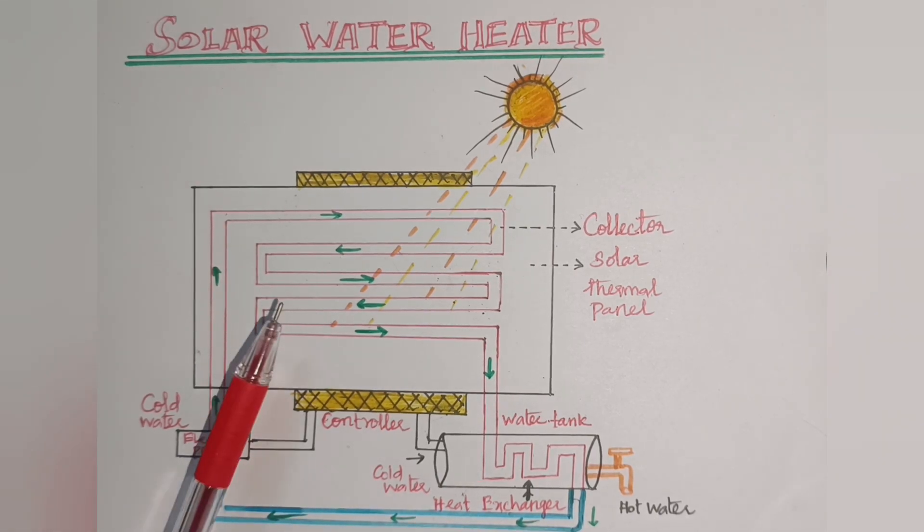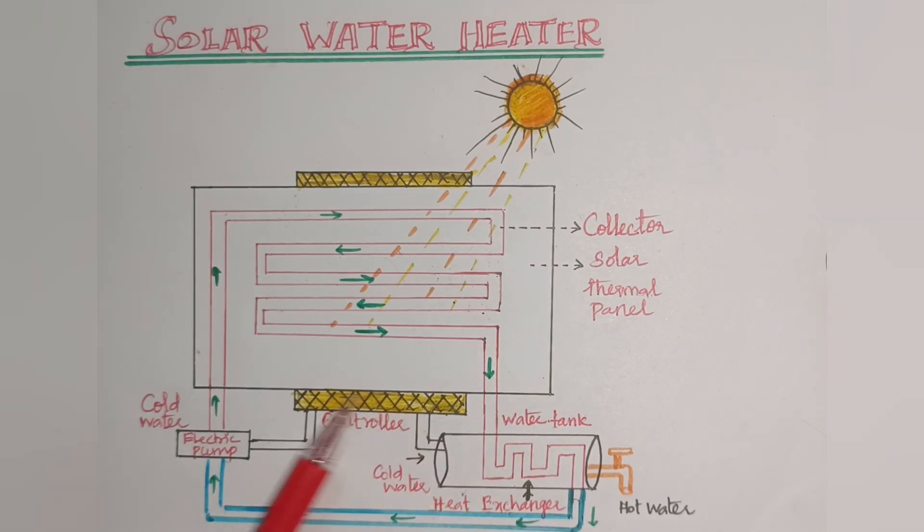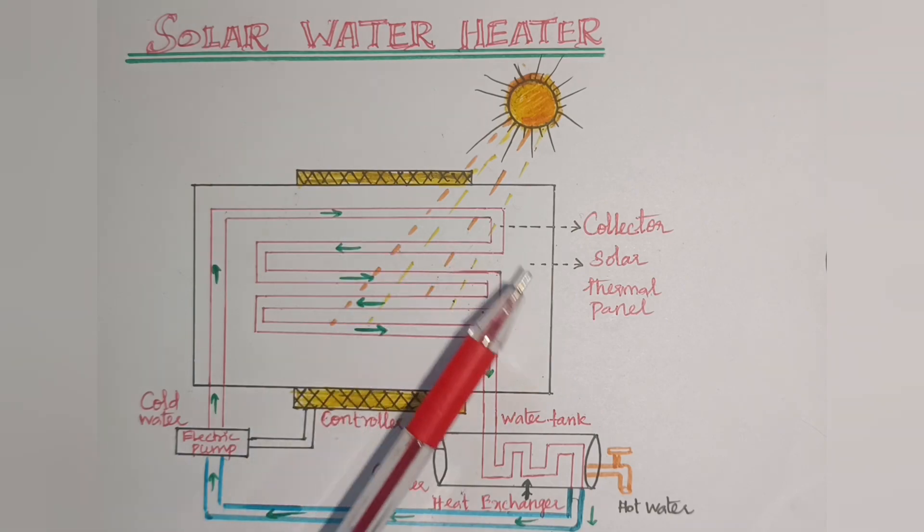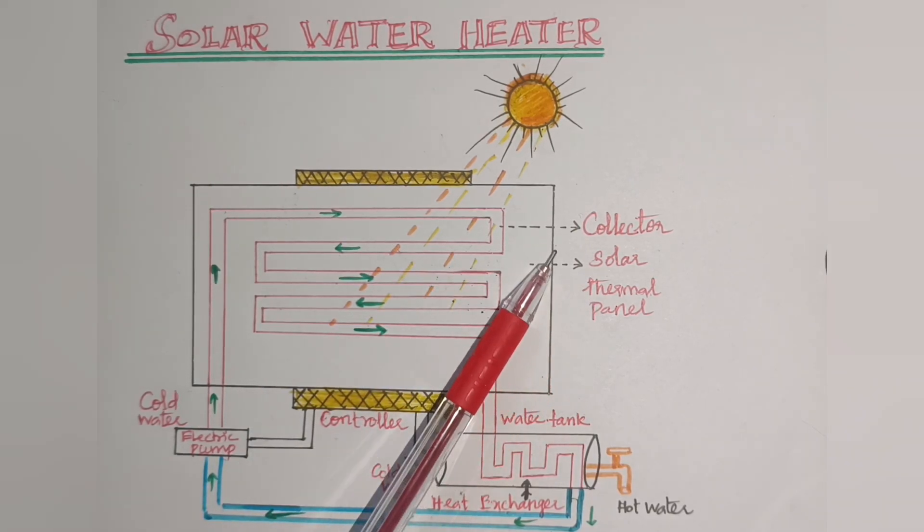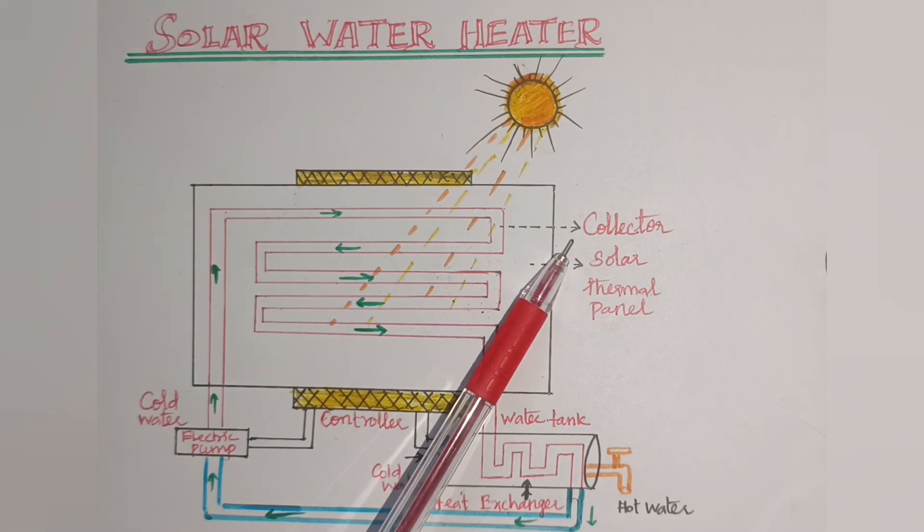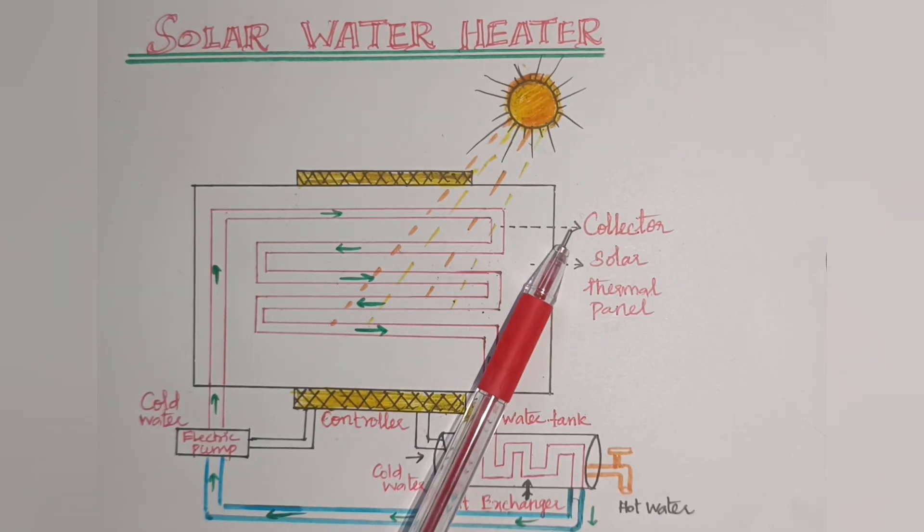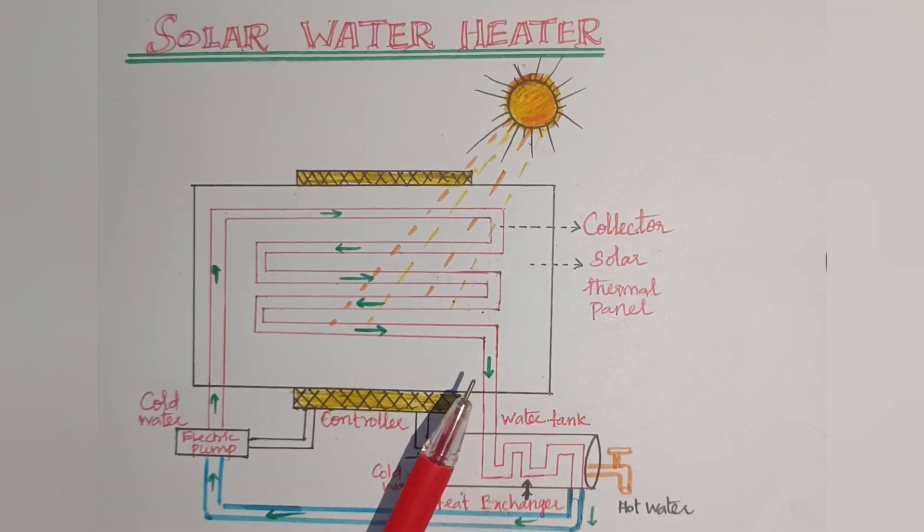Construction. It consists of solar thermal panel. In the thermal panel, a collector is used to collect the radiation from the sun. The radiation heat energy is collected by this collector.